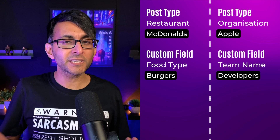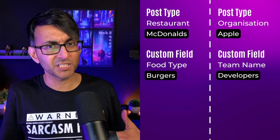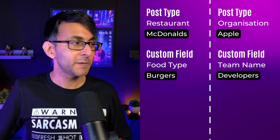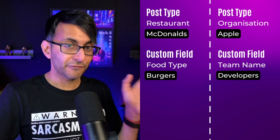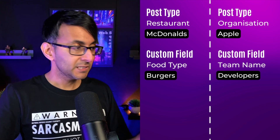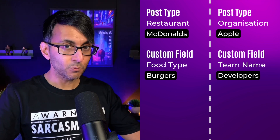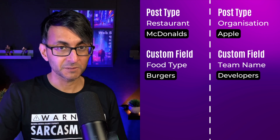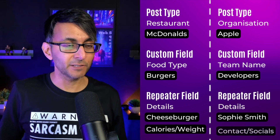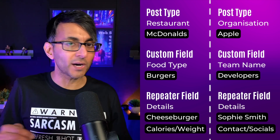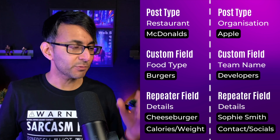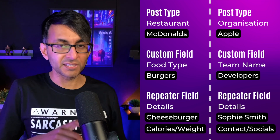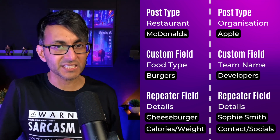So these are groups. Our post type is restaurant, we've created a new one for McDonald's, and inside of there we're going to have food types. The custom field is the food type. For the organization, the custom field will be the team name. So we've got organization and Apple, and inside of there we're going to have a custom field called team name — and the team name in this scenario is 'developers.' Now this is the point when we go and add in the repeater field. The repeater field details might be the name of the food, the calorie count, the ingredients, and how many people it serves.